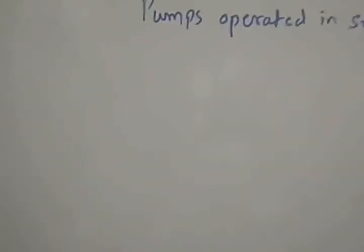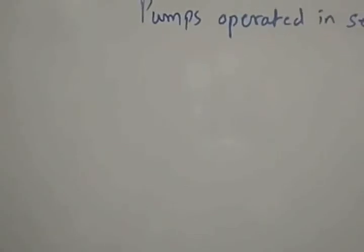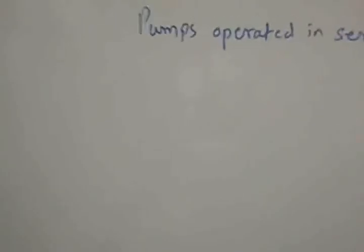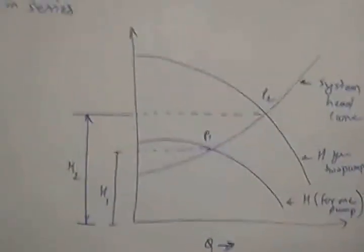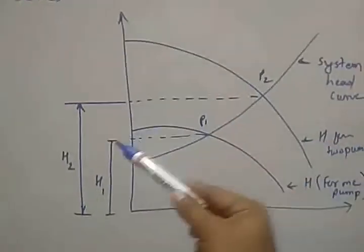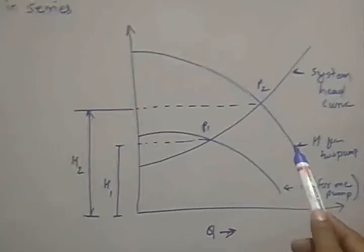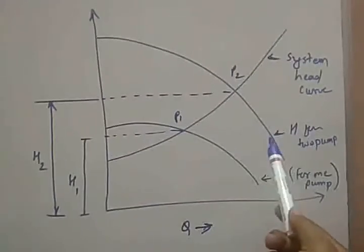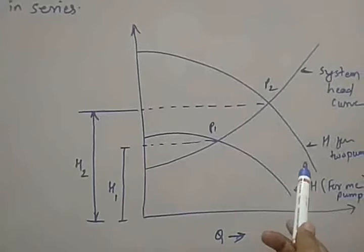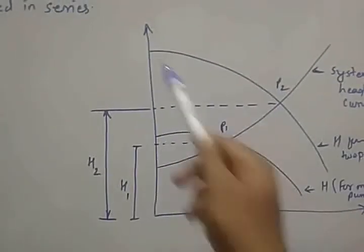Now we will see the operating point or range for pumps in series. In this case, the H versus Q curve for the individual pump is plotted, and also the H versus Q for the total head equal to the sum of heads of individual pumps for the same varied discharges. In the plot, this is the system head curve, this is the H versus Q plot for a single pump, and this is the H versus Q for the sum of heads of two pumps.